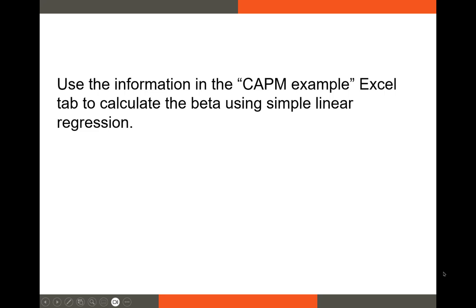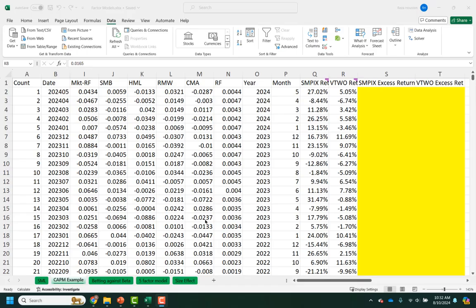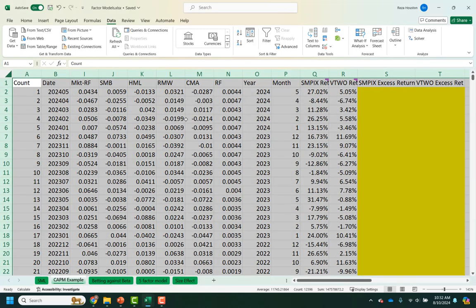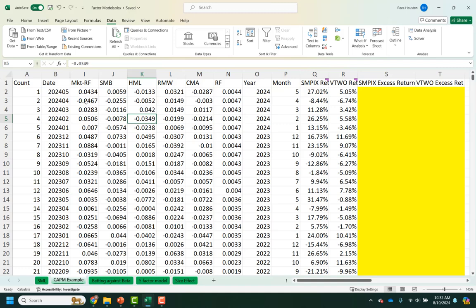So let's use simple linear regression to estimate our alpha and our beta. I've got this tab in our Excel spreadsheet for this section called CAPM example. Let's go to it. Let's regress our stock returns or our portfolio returns on our market risk premium.